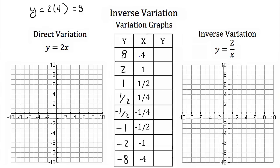We have a bunch of x and y coordinates to plot. When x is 4, y is 8; x = 1, y = 2; x = 1/2, y = 1; x = 1/4, y = 1/2; x = -1/4, y = -1/2; x = -1/2, y = -1; x = -1, y = -2; x = -4, y = -8. Connecting these points with a straight line gives us the direct variation graph. Notice this is a linear relationship, and it passes through the origin, the point (0, 0).